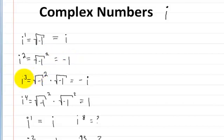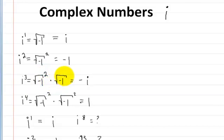When it's cubed, i cubed is written as the square root of negative 1 squared, times the square root of negative 1. The square and the square root cancel out, and you're left with negative i.